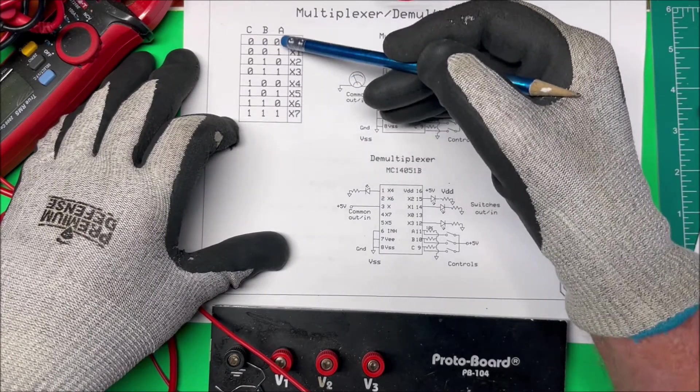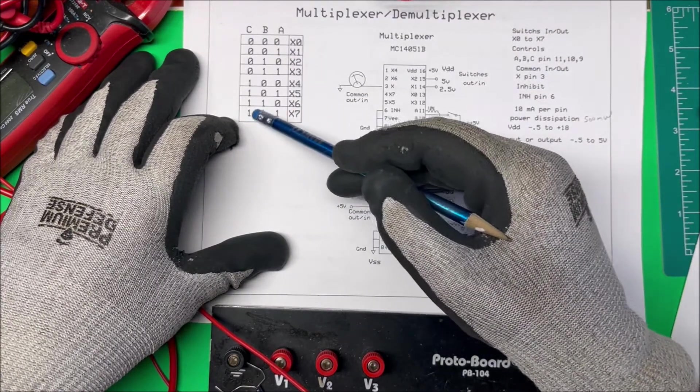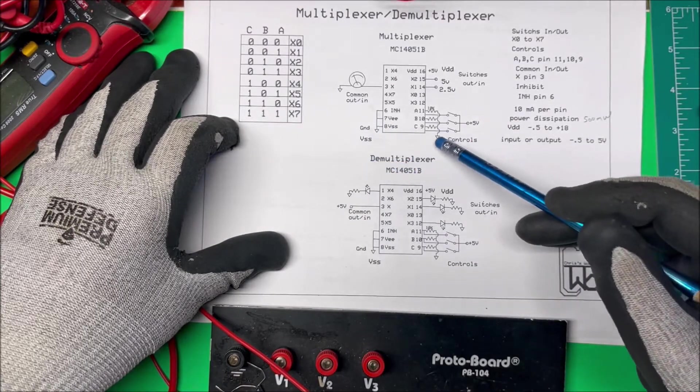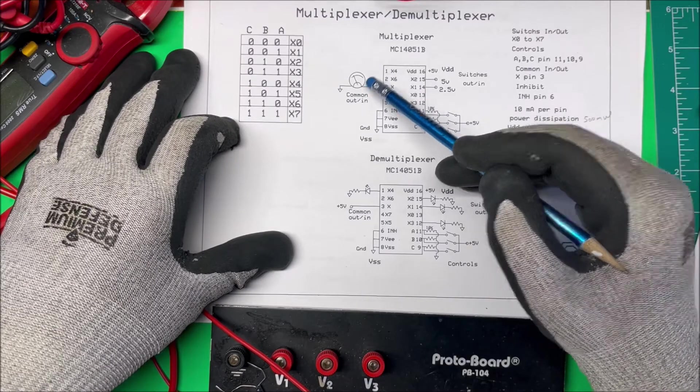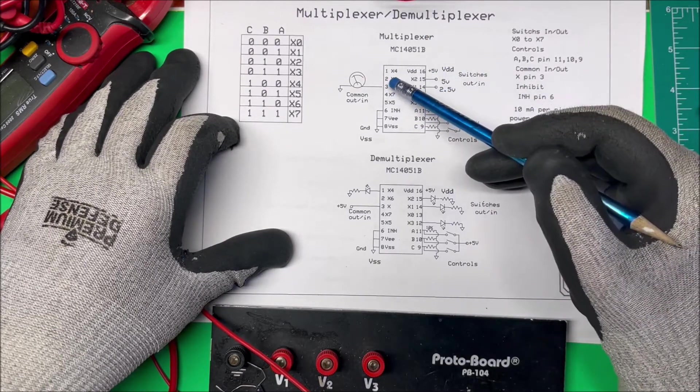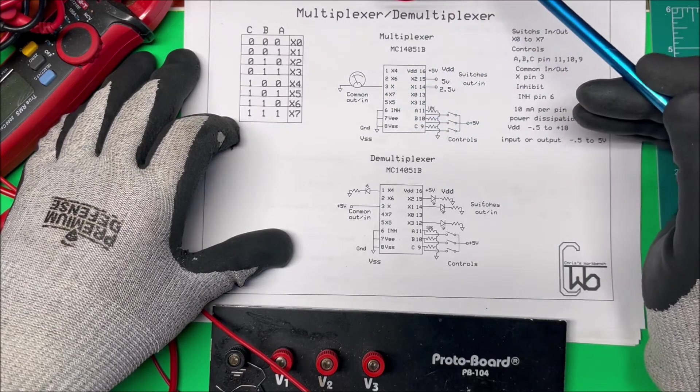So wherever I switch these pins here, if I do them all, there's going to be a 7, and then pin X7, whatever voltage I put on X7 is going to come out on pin X over here, pin number 3.